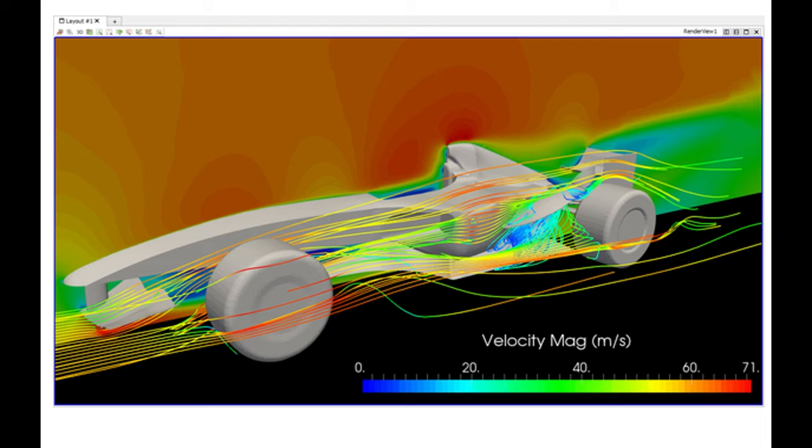So you can only apply the Bernoulli principle along a streamline. So I could describe the relative properties of this point and this point, or this point and this point, but I could not relate this point to this point with the Bernoulli principle. I would actually have to go back to our conservation of energy.